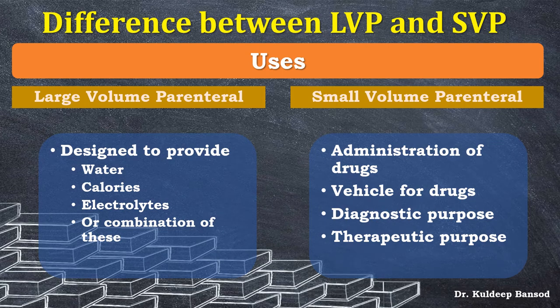Another difference is their uses. Large volume parenteral products are designed to provide water, calories, electrolytes, or a combination of calories and electrolytes. Small volume parenterals are used for drug administration and as vehicles for drug delivery. They are also used for diagnostic and therapeutic purposes — for example, insulin injection administered during diabetes mellitus and procaine penicillin G injection given during bacterial infection.